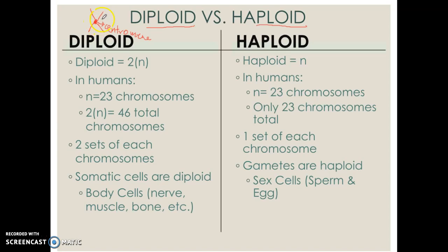Humans normally have diploid cells, which means that we have 2N — that N stands for number of chromosomes. When N in humans is 23 chromosomes, we are diploid because we have a total of 46 chromosomes, meaning 46 total centromeres. All of our body cells — we are going to call these somatic cells — are going to be diploid. Please make sure that you write this term down because it is really, really important.